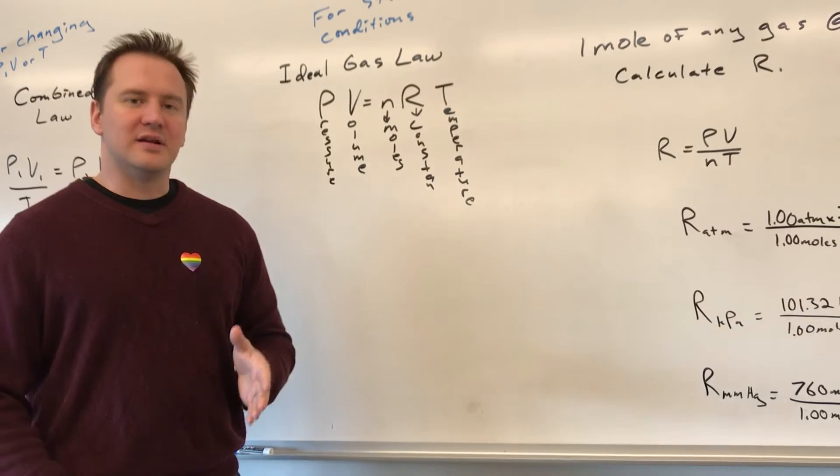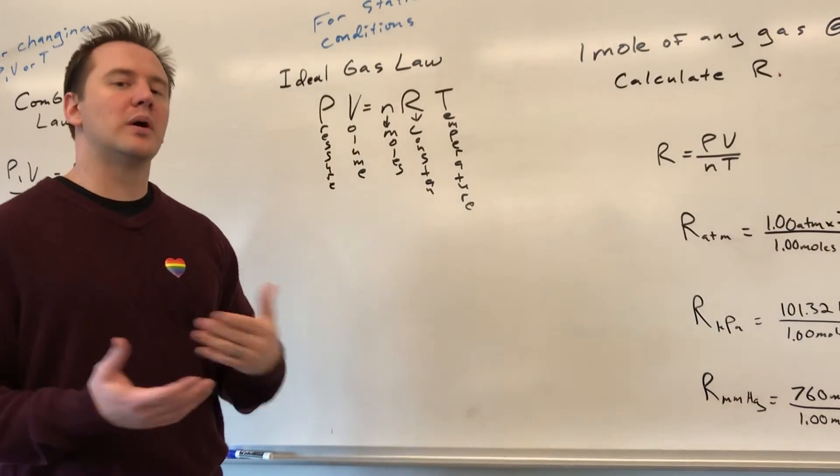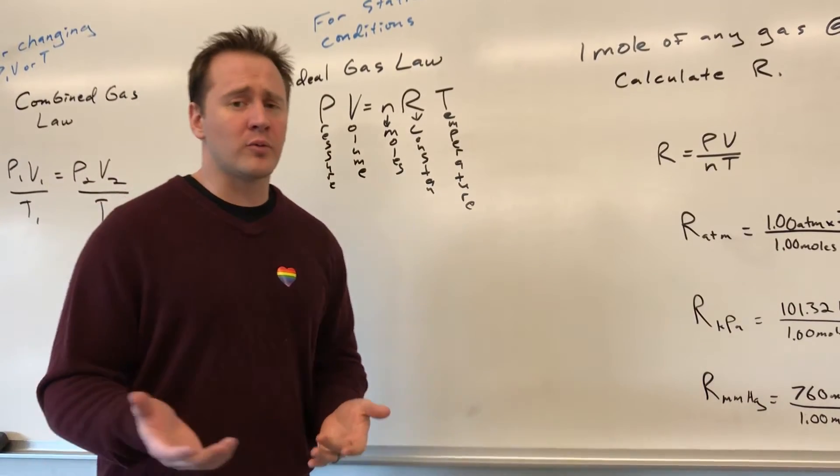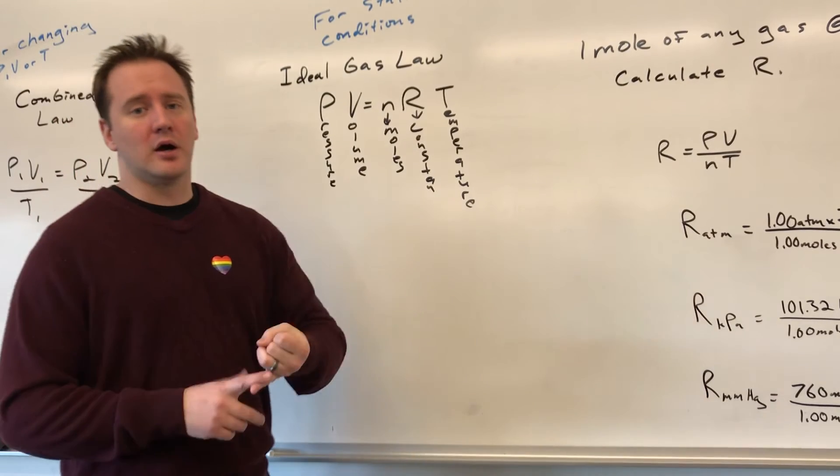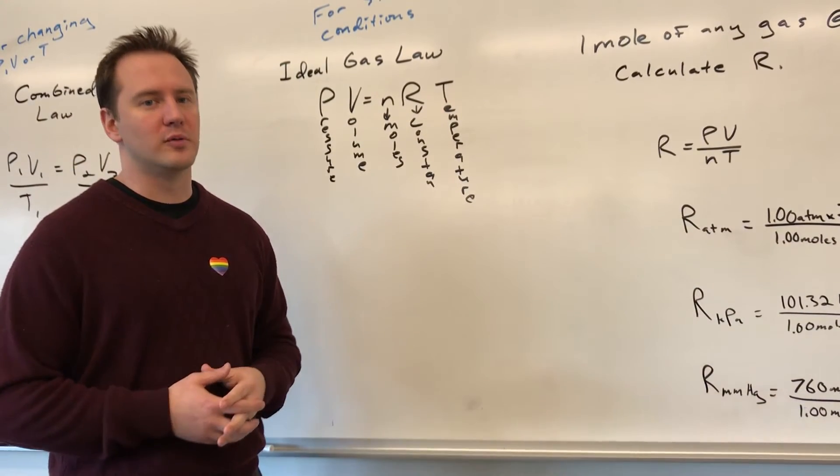Now, R is a constant, and that constant can change. It doesn't change, but the way we describe it can change depending on how we describe pressure, and we've already learned there's a bunch of different ways to do that. The three we'll focus on in this video are kilopascals, atmospheres, and millimeters of mercury, since those are the three most common we use in this class.